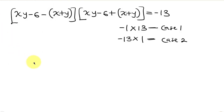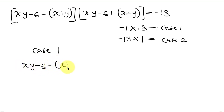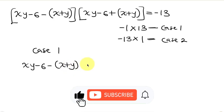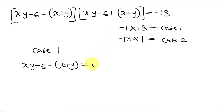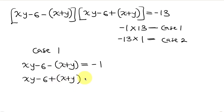For Case 1: the first factor, (xy - 6) - (x + y), equals the smaller factor, -1. The other factor, (xy - 6) + (x + y), equals the bigger factor, 13. We call this Equation 1 and Equation 2.